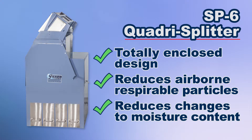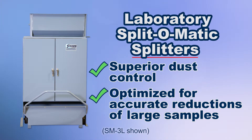The Gilson quadra splitter, with its totally enclosed design, efficiently divides free-flowing material into four representative fractions in a single pass, all while reducing operational dust. Gilson's laboratory split-o-matic splitters have welded steel constructed front panel doors that latch shut for superior dust control during the splitting process of large samples of free-flowing granular materials.